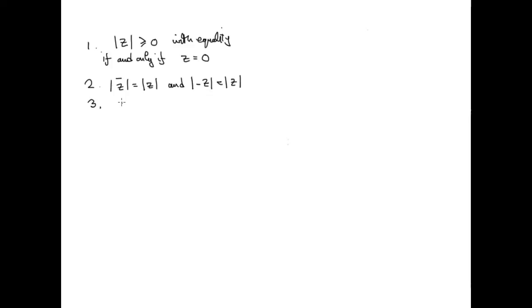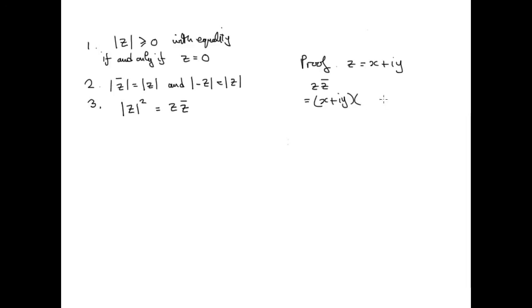We come now to a very important property of the modulus: the modulus of a complex number squared is identical to the product of the complex number and its conjugate. To see that, let's take any complex number x plus iy and look at z times its conjugate, which would be x plus iy times x minus iy — the conjugate just changes the sign of the imaginary part.